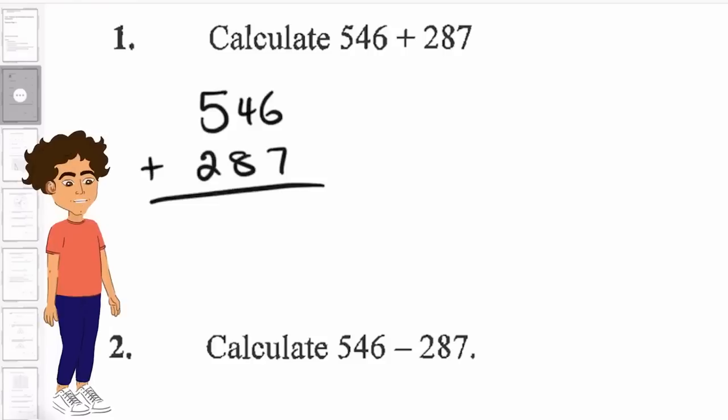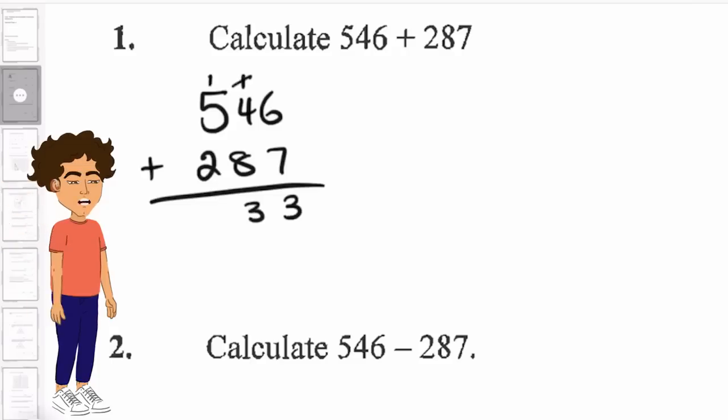We know 6 and 7 gives us 13, so we put 3 there and 1 we carry. 4 and 8 gives us 12 plus the 1 gives us 13. And then 5 and 2, 7 plus the 1 that we were carrying gives us 8. And there we are, 833.